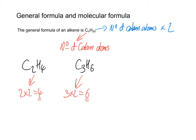If we try one last example and we say I've got C7, that would mean seven multiplied by two equals 14, so the number of hydrogen atoms would be 14. Each of these that we've just worked out — C2H4, C3H6, and C7H14 — are all examples of molecular formula. The molecular formula just shows the total number of carbon atoms and the total number of hydrogen atoms, always written in the order of carbons and then hydrogens.